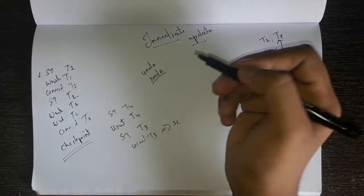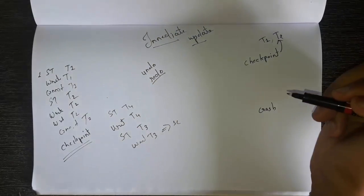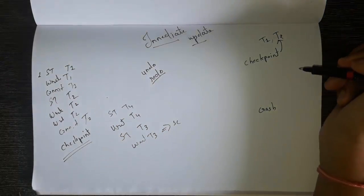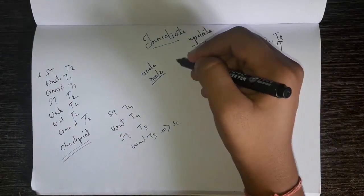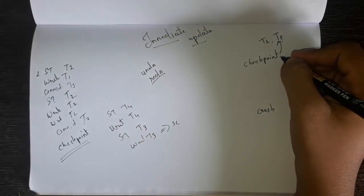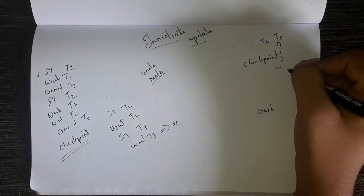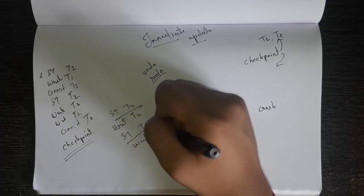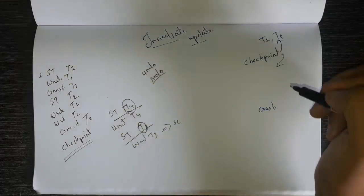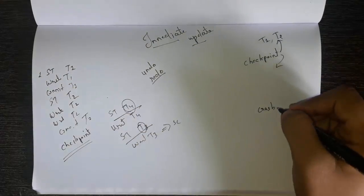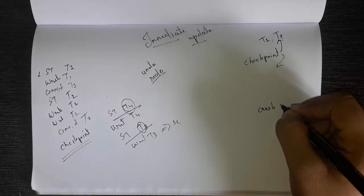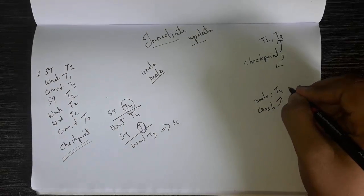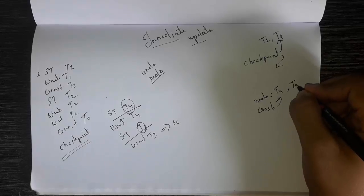Because this is an immediate update technique, you have to redo all the transactions that are started after the checkpoint. There is no transaction committed after the checkpoint. If any transaction commits after the checkpoint, you have to make an arrow and write the name of the transaction. There are only two transactions started after the checkpoint: T4 and T3. So you have to make a redo list — crash and make an arrow with T4 and T3.